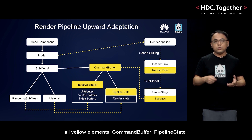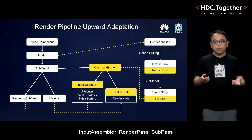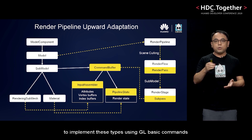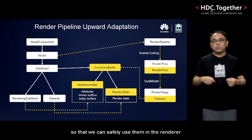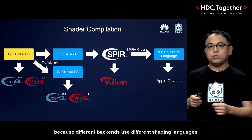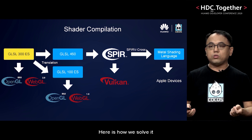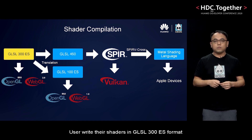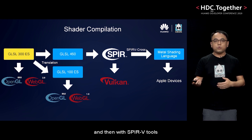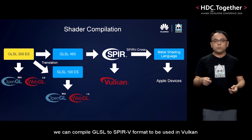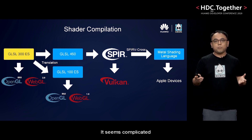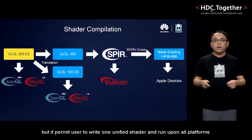The interesting part is that all the yellow elements — command buffer, pipeline state, input assembler, render passes, sub-passes — are built-in in Vulkan but absent in WebGL. What we have done in GFX WebGL is to implement these types using GL basic commands, so that we can safely use them in the renderer. The API adaptation is only part of the story. Shaders also need to be ported, because different backends use different shading languages. Users write their shaders in GLSL 300ES format. During the publish process, the editor translates the shader to GLSL 100 for older backends. Then with SPIR-V tools, we compile GLSL to SPIR-V format for Vulkan. Finally, we use SPIR-V Cross to compile SPIR-V shaders to Metal Shading Language for Apple devices. This allows users to write one unified shader and run it on all platforms.